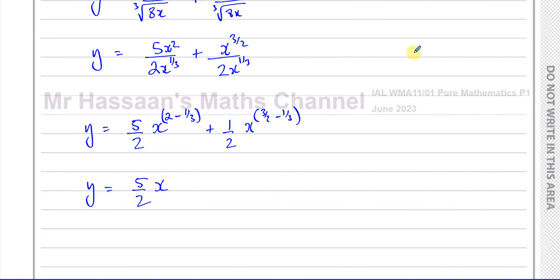2 is 6 over 3, minus 1 over 3, which is 5 over 3. So x to the power of 5 over 3, plus a half x to the power of...